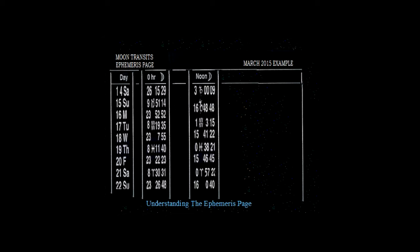Now we're on the same ephemeris page for the moon transits in the month of March 2015. As an example of how the moon is transiting, we look at the 19th and we see 0 degrees Pisces, and the next day on the 20th is 15 degrees Pisces. So 0 degrees Pisces minus 15 degrees Pisces equals 15 degrees, and it's in the water element. Remember the trinity of water, which is Cancer, Scorpio, and Pisces.